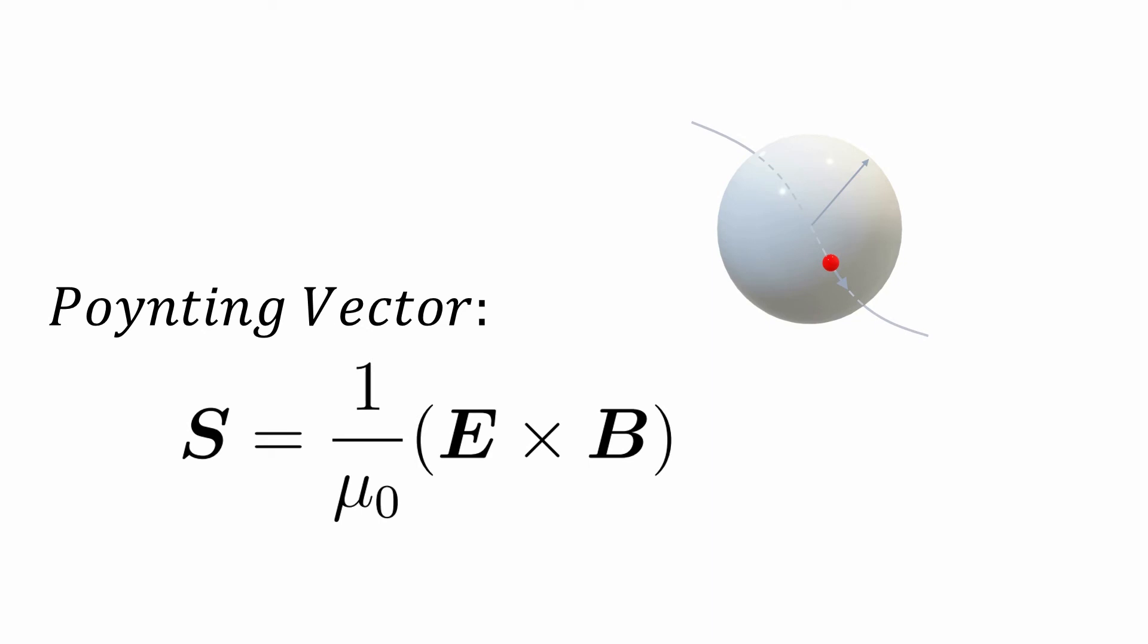Since the Poynting vector represents a flux, we can directly find out the total rate of energy being radiated in all directions by simply integrating it throughout the entire surface.